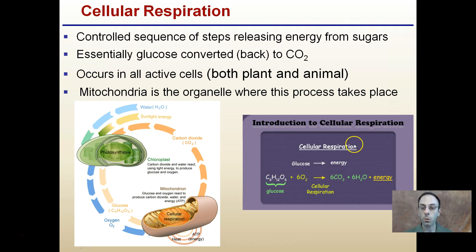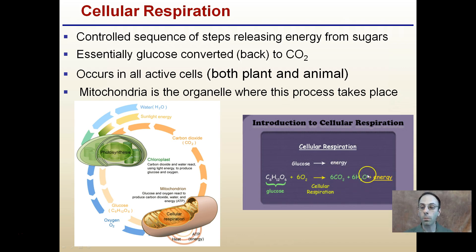Looking at the equation: glucose plus six oxygens, through the process of cellular respiration, yields carbon dioxide, water, and energy. This is occurring in the mitochondria. Heat and ATP, or energy, are being released, while glucose and oxygen are taken in.